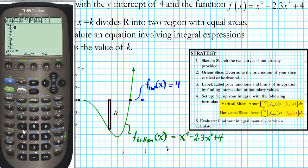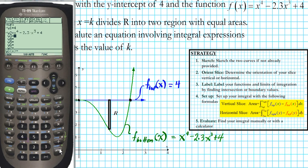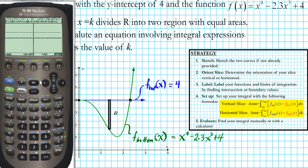The first function is y equals 4, press enter. The second function is x raised to the fourth power minus 2.3x raised to the third power plus 4, press enter. Let's go ahead and graph the function — diamond F3 will generate the graph of the function for us.